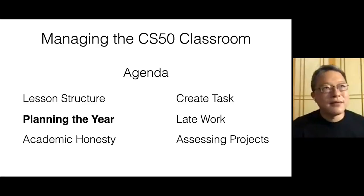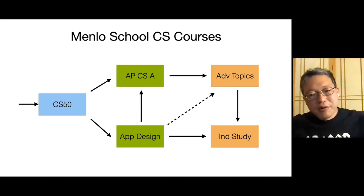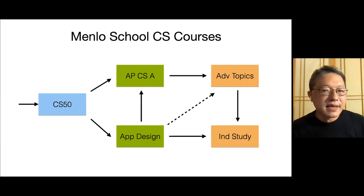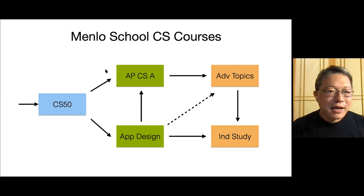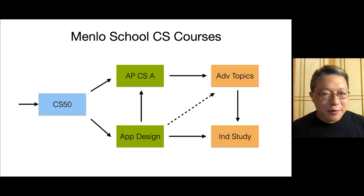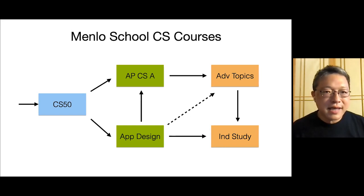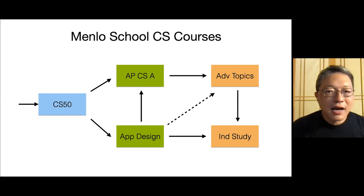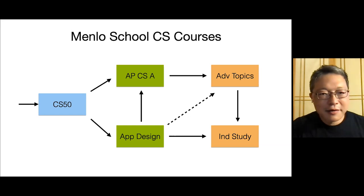What does the whole four-year process look like? The intro level course is CS50 — any student who wants to take any CS class at Menlo has to take CS50 first. When kids say they already know Python or Java, we tell them: just because you can drive a car doesn't mean you know how it works. CS50 is like learning stick shift and going under the hood to see how the engine works. There's real value in understanding computer science at the level of bits and bytes.